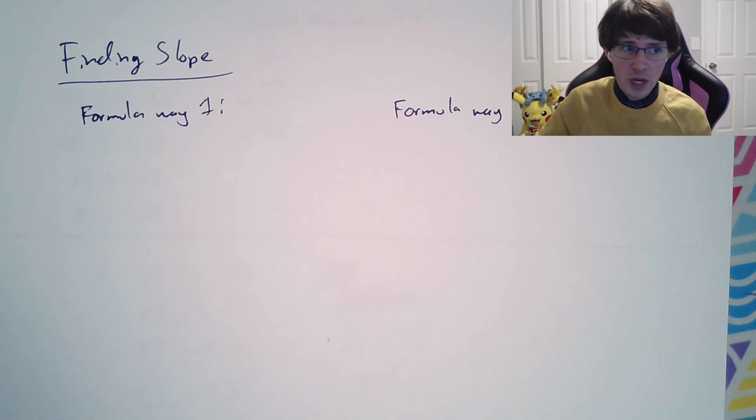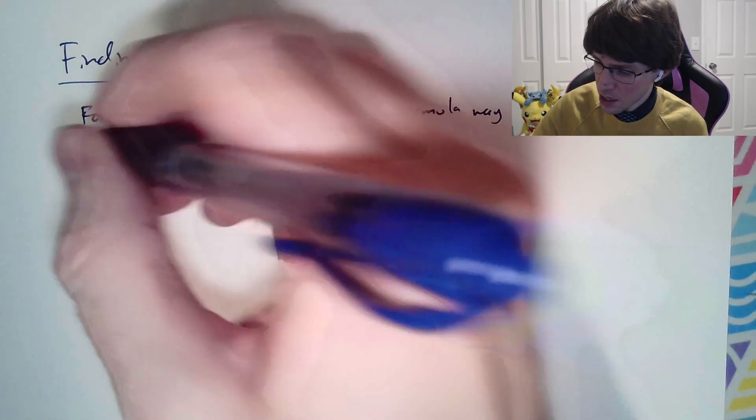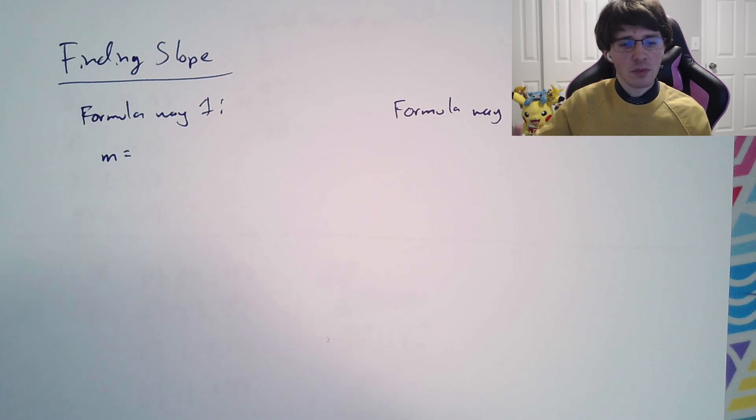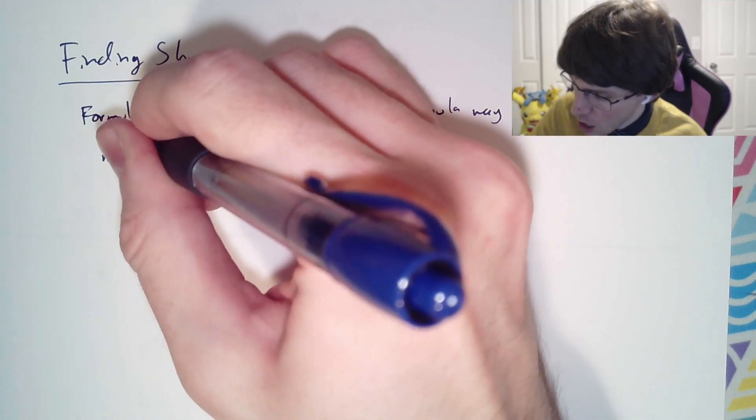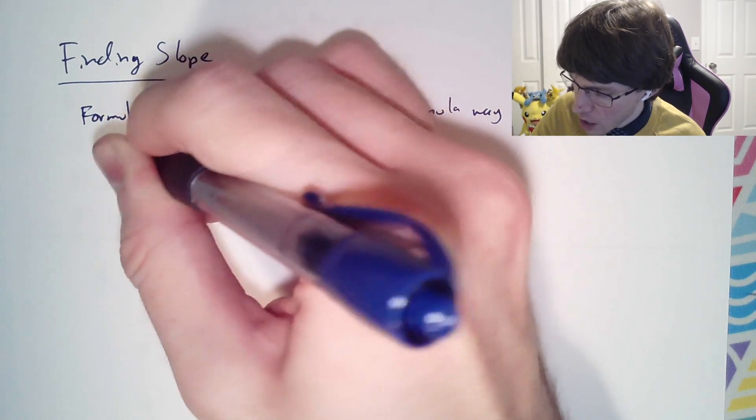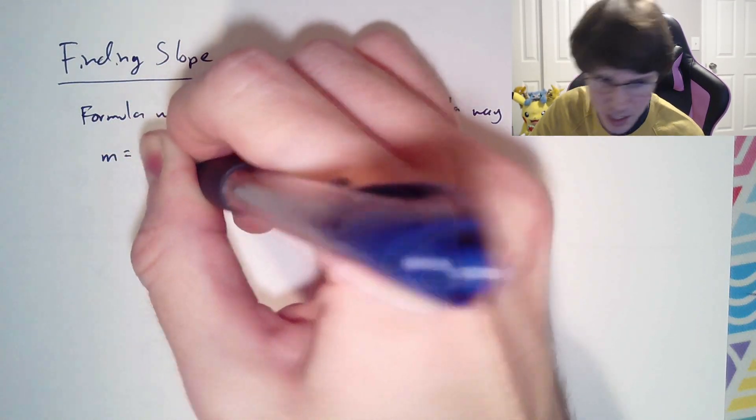Really, there are a couple ways for finding slopes. The formula way is the most common way. You say that m is the change in y over the change in x, the rise over the run, or most commonly y2 minus y1 over x2 minus x1.